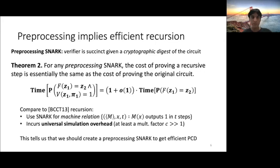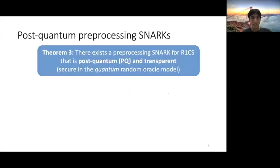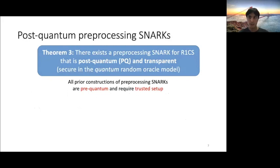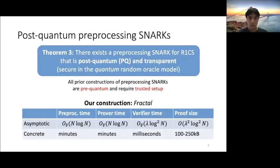So it tells us that if our goal is to create an efficient PCD scheme, we should focus on creating a preprocessing SNARK. So this is exactly what we do. We're going to create a post-quantum preprocessing SNARK for R1CS. And moreover, this is going to be a transparent SNARK. So all prior constructions of preprocessing SNARKs were pre-quantum and required trusted setups. Here, we're going to do it transparently and in the quantum random oracle model. So our construction is called Fractal, and it has the following asymptotes. We have a quasi-linear prover, logarithmic verifier, and logarithmic proof size. And each of these matches the best known non-preprocessing post-quantum SNARK. Concretely, the prover times are in minutes, verifier times in milliseconds, and the proof size is 1,200 kilobytes. And we have an implementation of this. So we can actually see some concrete graphs.